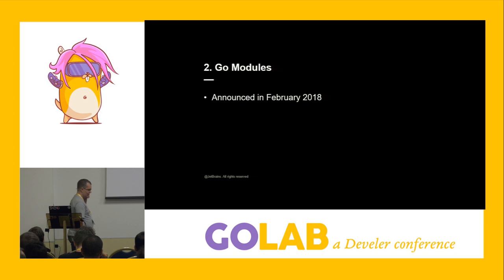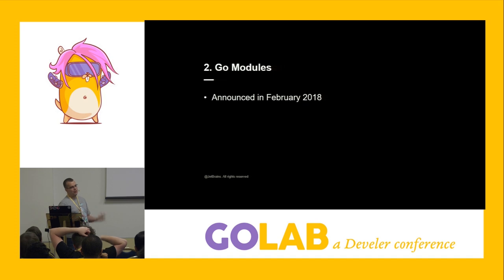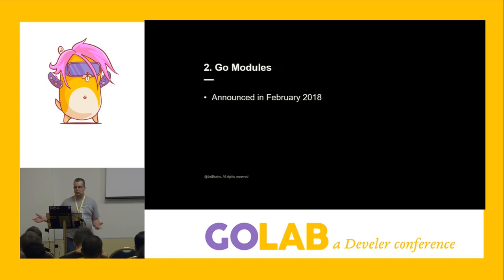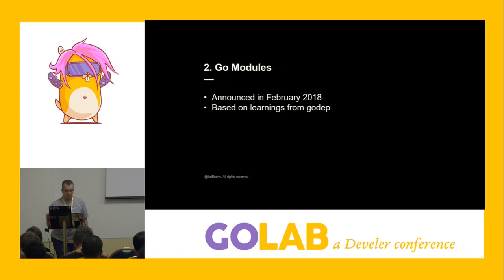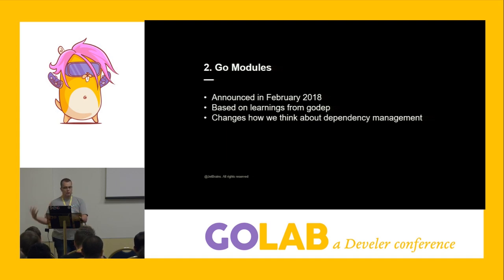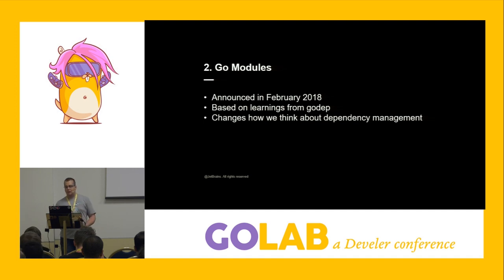Go modules is the current approach for making dependencies in Go work. It's a solution proposed somewhere in February 2018, based on the learnings from Dep, from all the other package managers, from other languages, and from Rust. It was a big announcement. It changed how we think about dependencies because it introduces a new way to resolve dependencies in terms of version, with an algorithm called MVS — Minimal Version Selection.